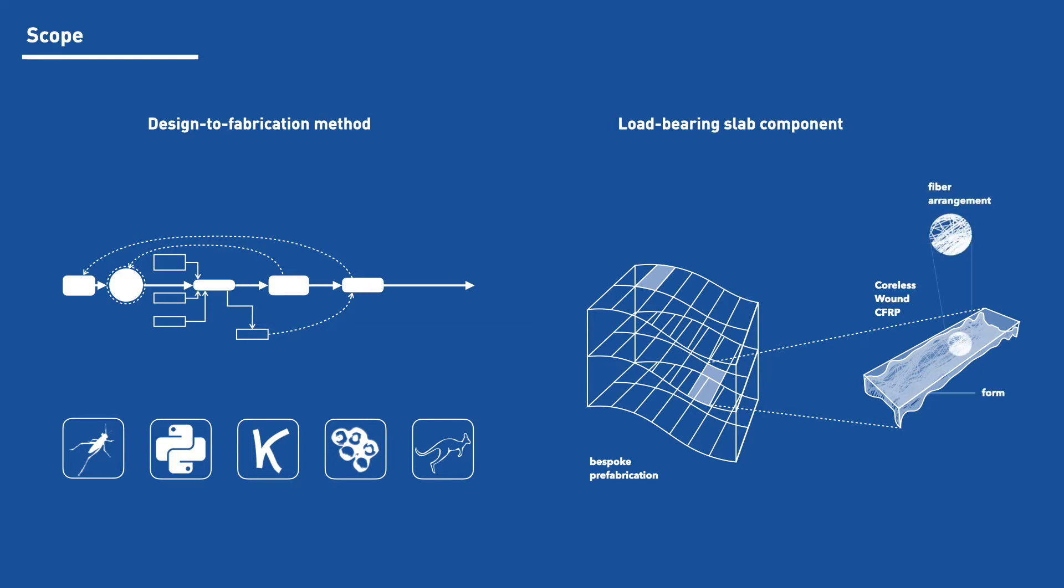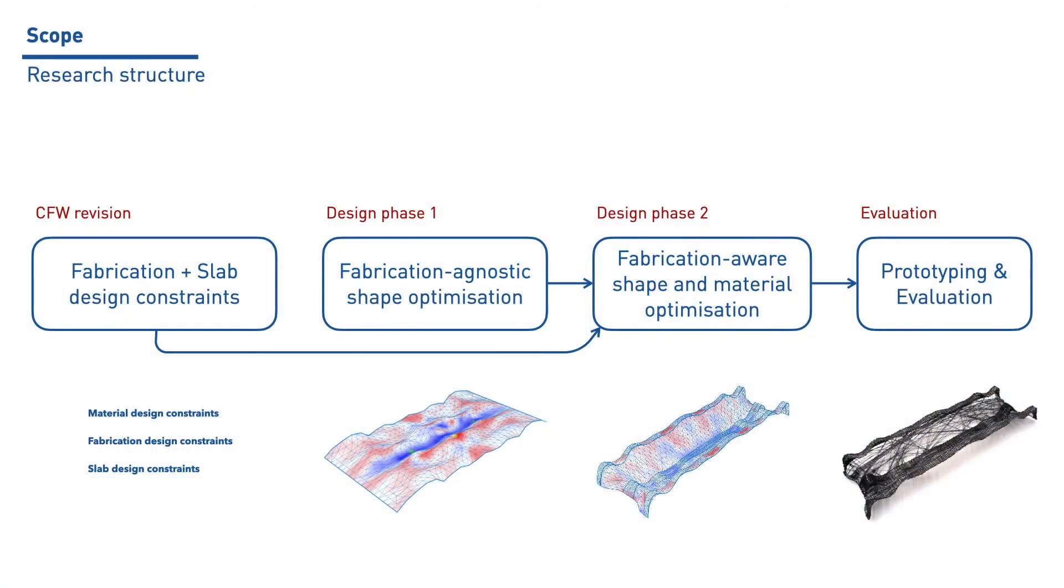By combining form and fiber architecture optimization, significant material efficiency is expected to be attained. The research is introduced by a revision of the design constraints that emerged from the material fabrication technique and the slab scenario. It is followed by two phases on the development of the shape optimization workflow: an initial fabrication agnostic exploration and a second where the fabrication awareness is embedded. Finally, the method is evaluated by producing and testing a slab component prototype.